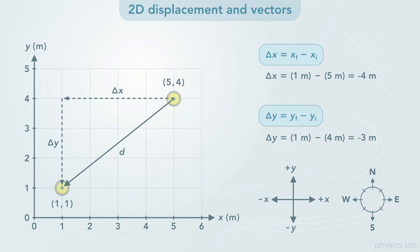the coordinates and the math kept track of the positive and negative signs for us. 1 minus 5 is negative 4, and 1 minus 4 is negative 3.